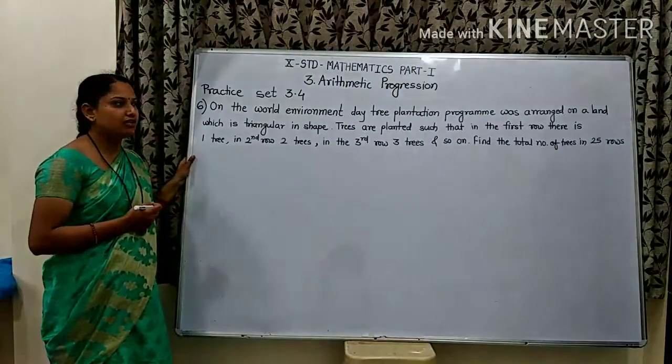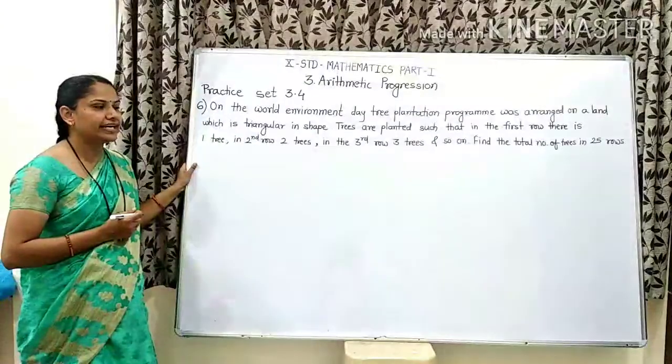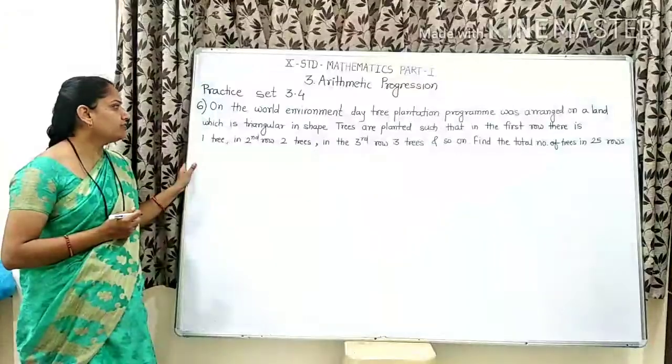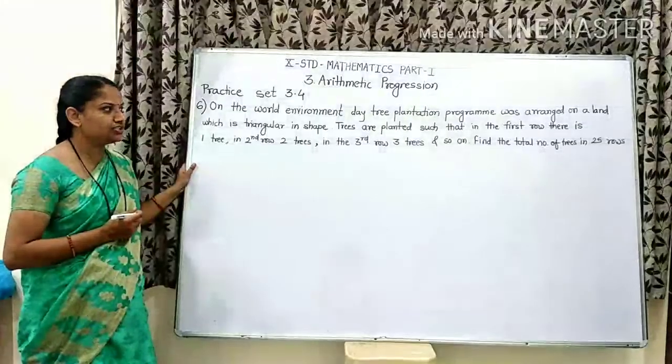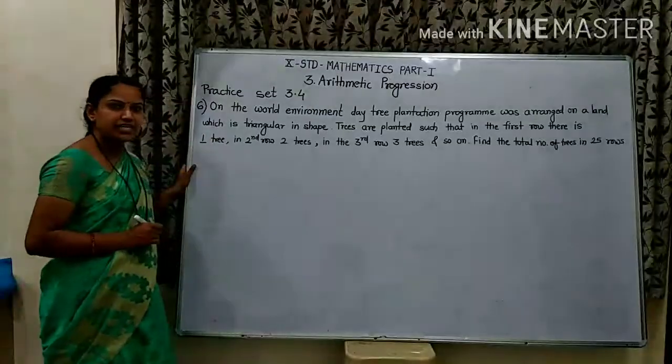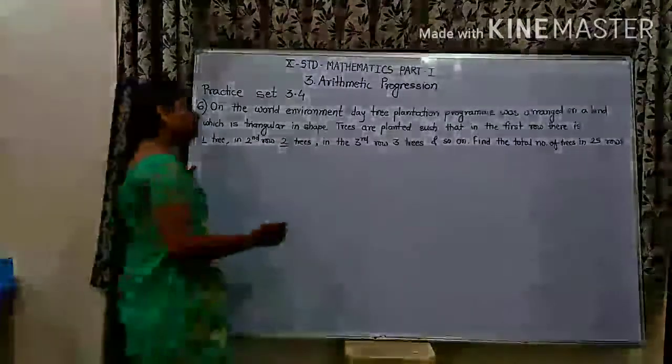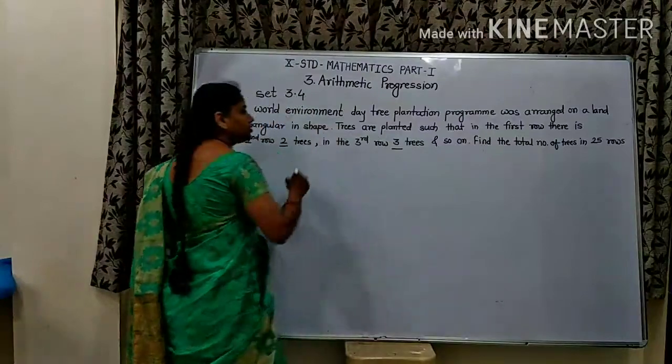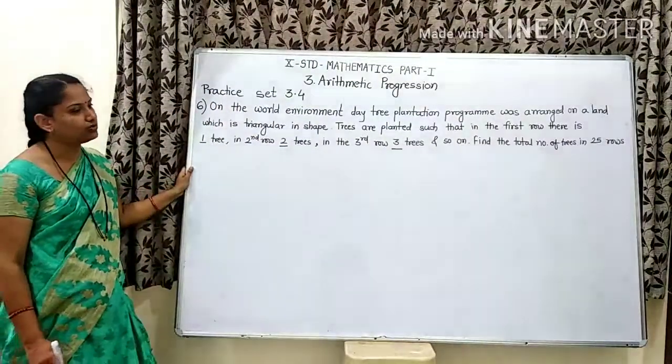On World Environment Day, a tree plantation program was arranged on a land which is triangular in shape. Trees are planted such that in the first row there is one tree, in second row there are two trees, in the third row three trees, and so on. Find the total number of trees in 25 rows.